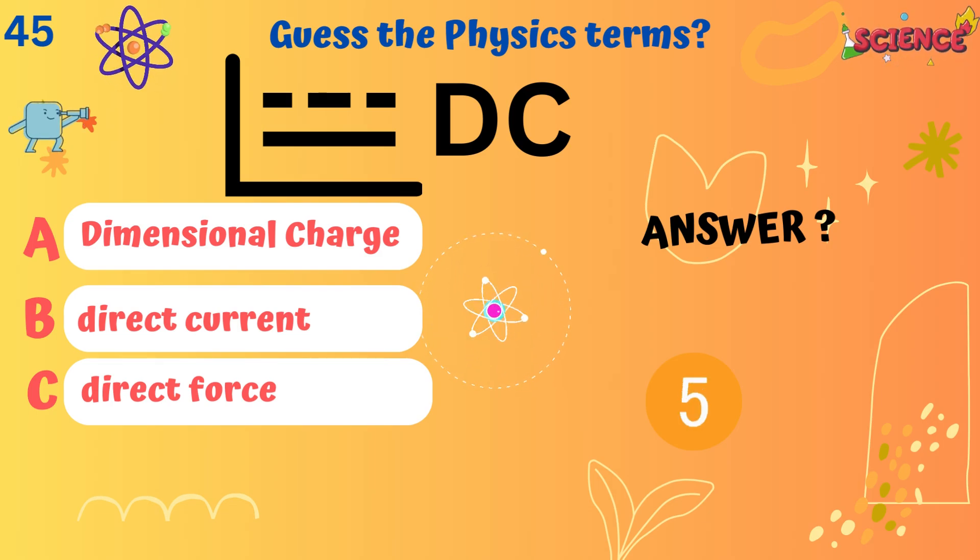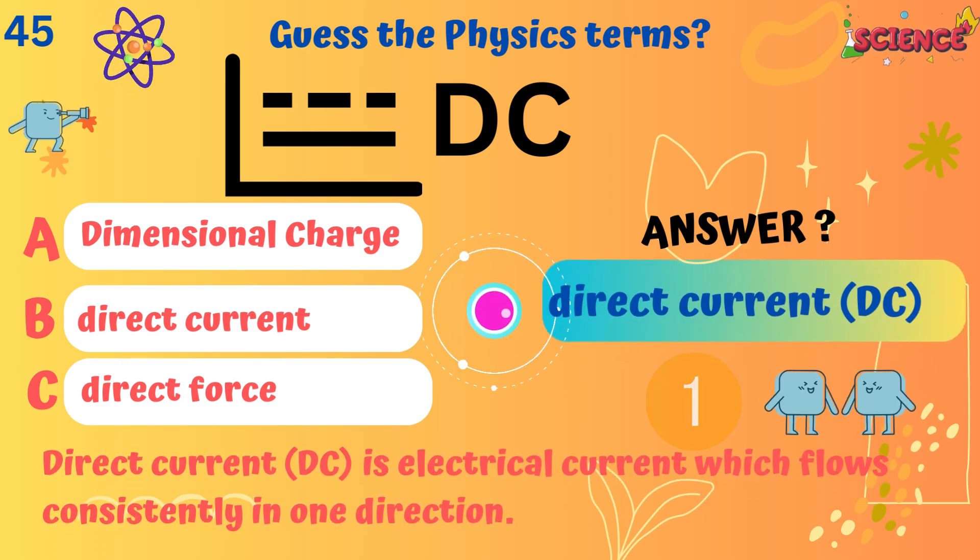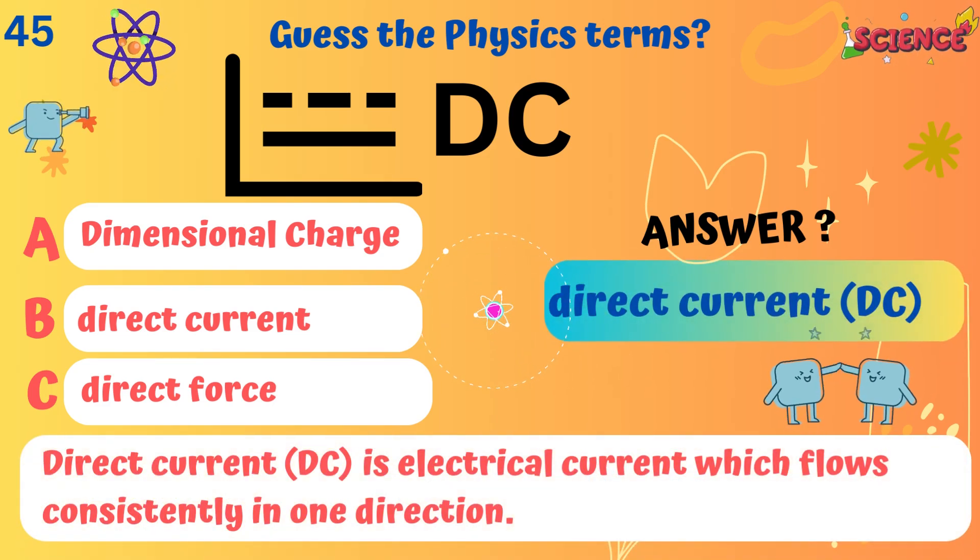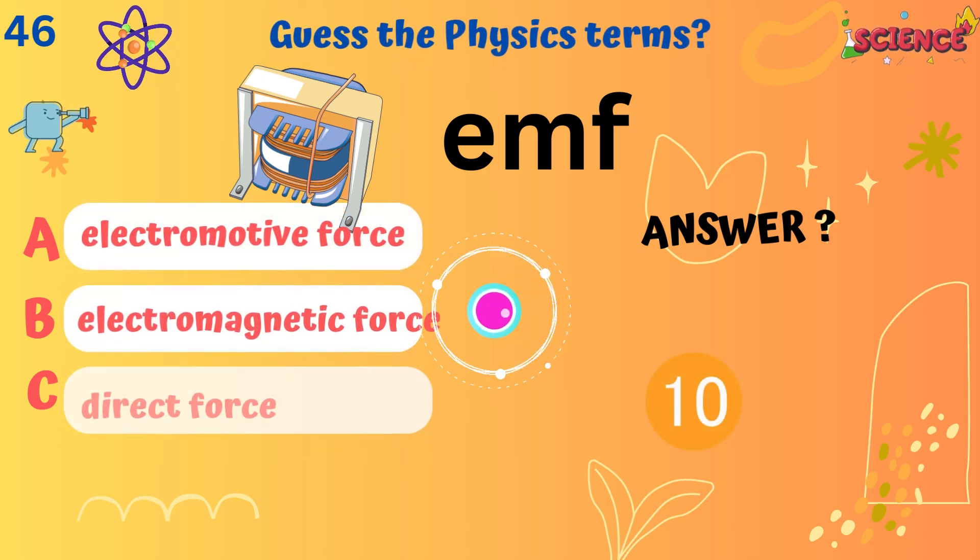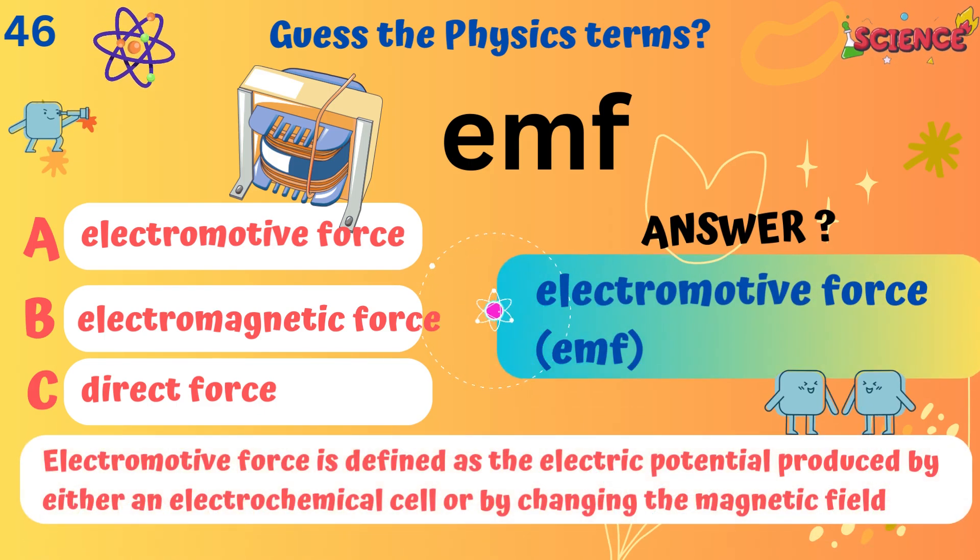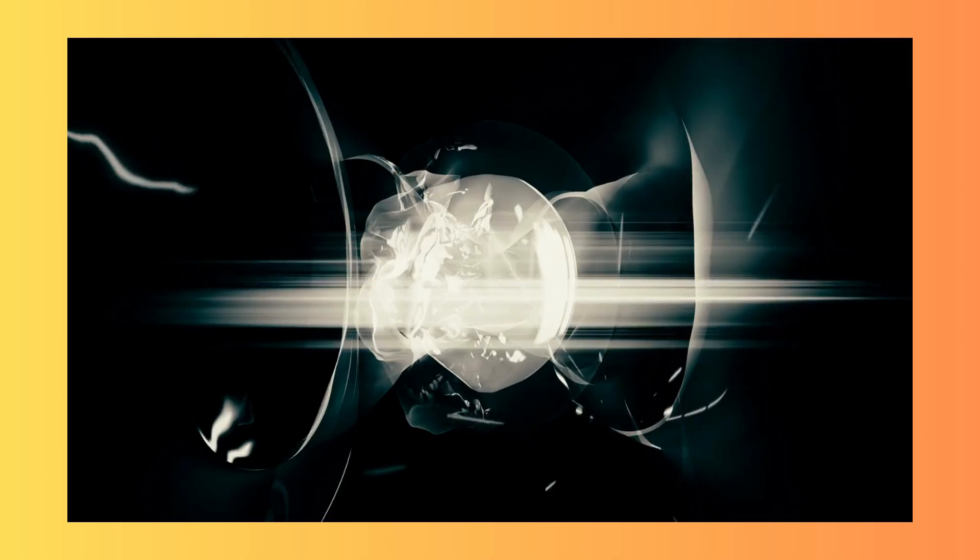Direct current. Direct current in DC is electrical current which flows consistently in one direction. Electromotive force. It is defined as the electric potential produced by either an electrochemical cell or by changing the magnetic field.